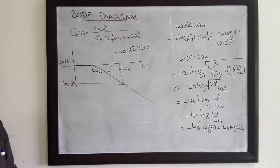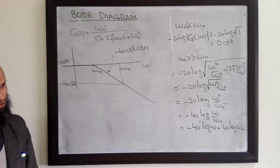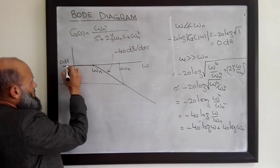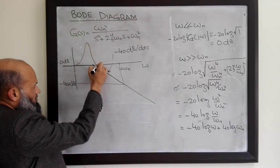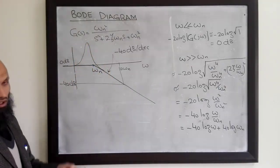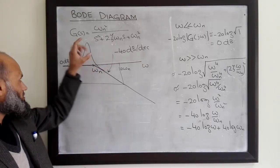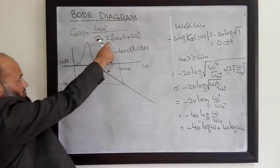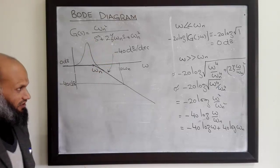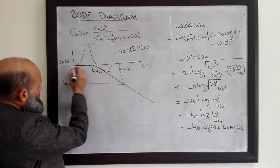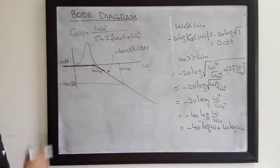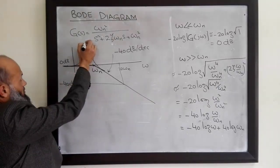For the case of the first order factor, the asymptotic magnitude plot was quite accurate. However, for a quadratic factor it is less accurate. For a more accurate plot, depending upon the value of ζ (zeta), you will observe some peak in the magnitude plot. Smaller is the value of zeta, larger will be the peak. We can make corrections to the asymptotic plot by determining this peak.